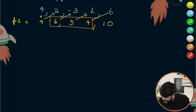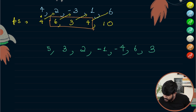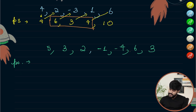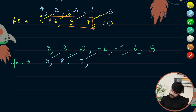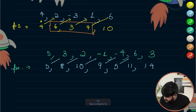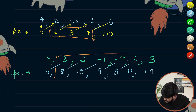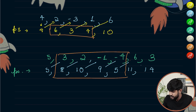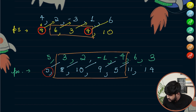Let's take another array: [5, 3, 2, -1, -4, 6, 3]. Its prefix sums are: 5, 8, 10, 9, 5, 11, 14. The segment containing a zero-sum subarray is identified by observing a strange thing — the value 5 appears at two positions in the prefix sum array.